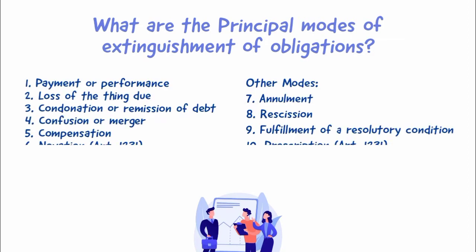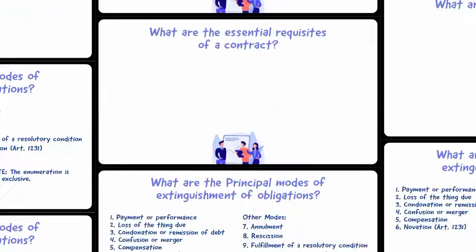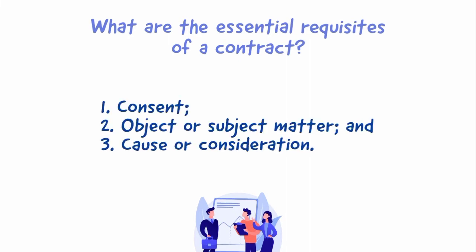What are the principal modes of extinguishment of obligations? They are the following: 1) payment or performance, 2) loss of the thing due, 3) condonation or remission of debt, 4) confusion or merger, 5) compensation, 6) novation. Other modes: 7) annulment, 8) rescission, 9) fulfillment of a resolutory condition, 10) prescription.